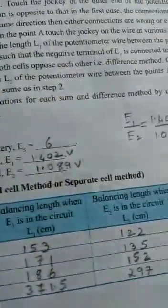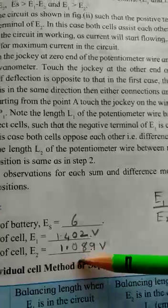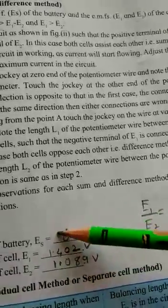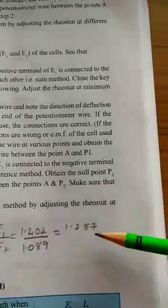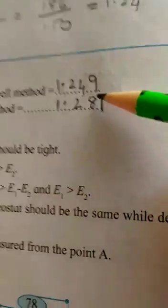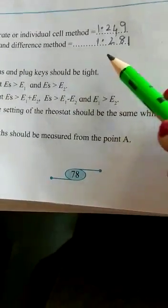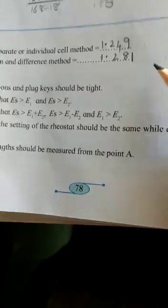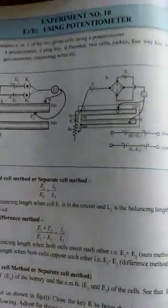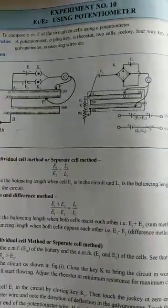So by comparison, by division, this we found out by multimeter in our previous videos. And we had got this much and then we got E1 by E2 as 1.287. Then by individual cell method, we got the value as 1.249. And by sum and difference method, we got it as 1.281. So that is how we complete our comparison of the cell by both the methods. Thank you and bye.